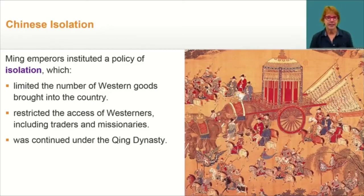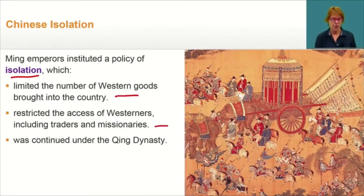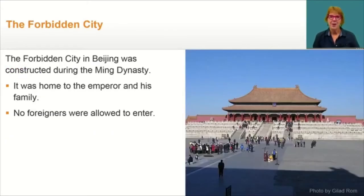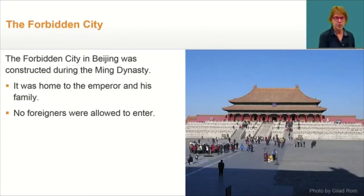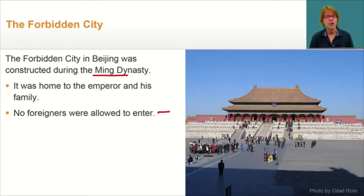The Chinese policy of isolation was designed to protect China from outside influences. It started with limiting the number of Western goods brought into the country, and it restricted access for Westerners including traders and missionaries. The policy was also continued under the Qing Dynasty. Perhaps nothing symbolizes Ming isolation more than the Forbidden City. The Forbidden City in Beijing was constructed during the Ming Dynasty, served as home to the Emperor and his family, required 14 years of construction and more than a million workers, and no foreigners were allowed to enter — in fact, no foreigner or commoner could enter without special permission.